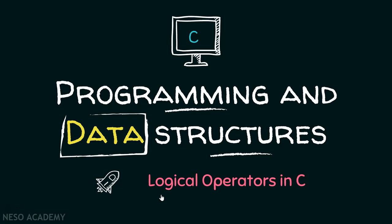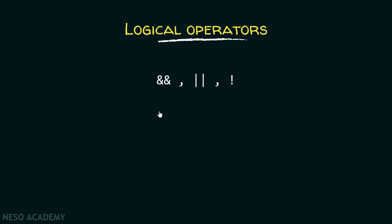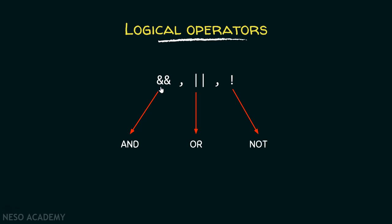In this lecture, we are going to talk about logical operators in C. These are all the logical operators available in C language. The first one is called AND operator, the second one is called OR operator, and the third one is called NOT operator. These are two ampersands representing AND, two pipe symbols representing OR, and an exclamation mark representing NOT.